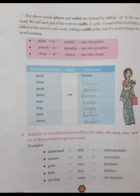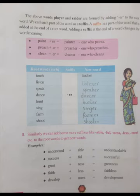Similarly, we can add more suffixes like -able, -full, -ness, -less, -ment, etc. to root words to get new words. Examples: understand plus -able equals understandable.